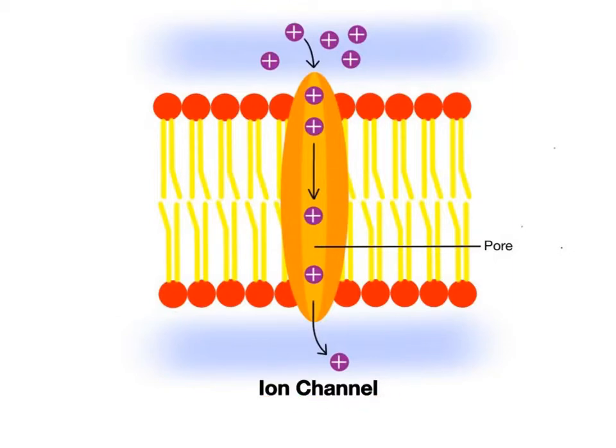Ion channels are unique proteins in that they contain a pore, an open tunnel that passes through the length of the protein. The pore is selective for certain ions, either positive cations or negative anions, to pass into or out of the cell.